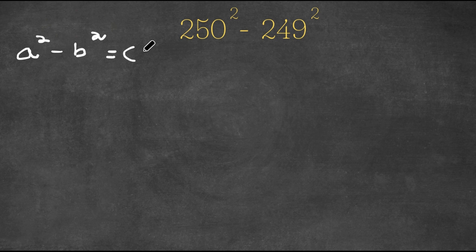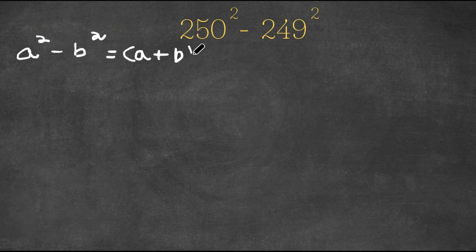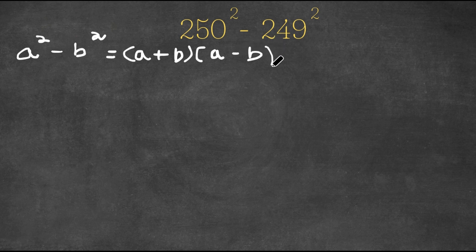a plus b times a minus b. So if you have any terms in the form a squared minus b squared, you can write them as a plus b times a minus b.